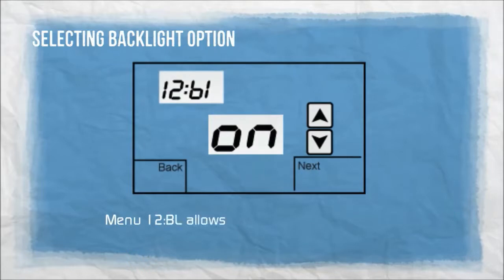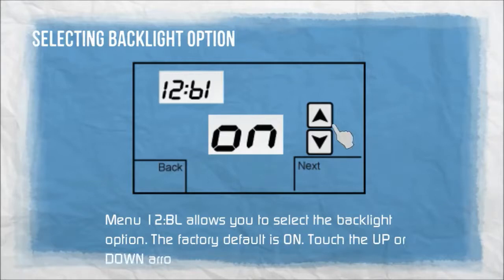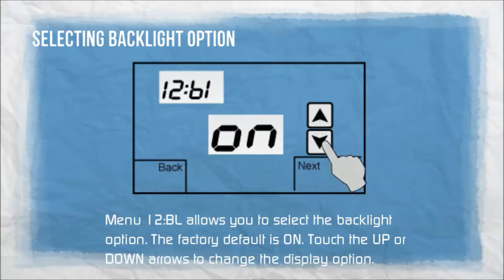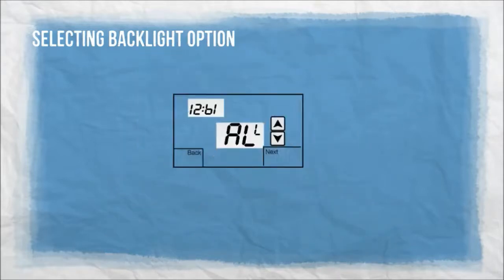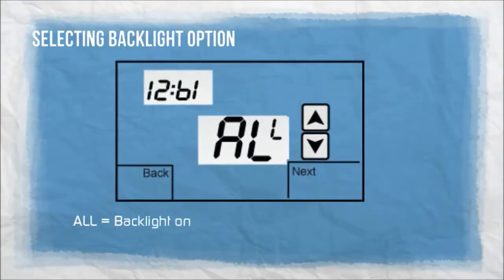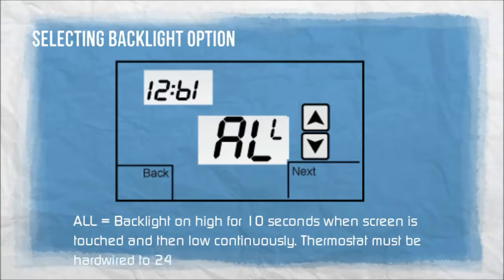Menu 12BL allows you to select the backlight option. The factory default is on. Touch the up or down arrows to change the display option. Off: no backlight. All: backlight on high for 10 seconds when screen is touched and then low continuously. The thermostat must be hardwired to 24VAC for this option.